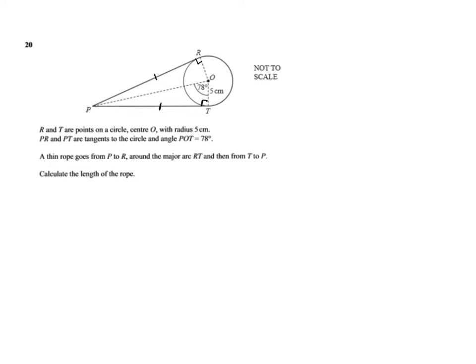Let's find out what do they want from us. A thin rope goes from P to R around the major arc RT and then from T back to P, and we have to calculate the length. So we have a piece of rope and it goes from here around the circle on the major arc and then back to P, and we have to find out what is the length of it.